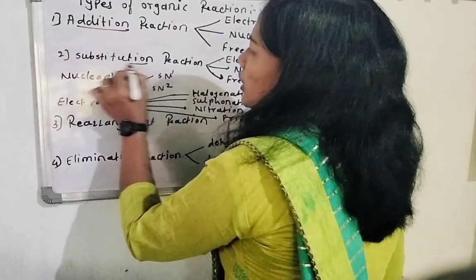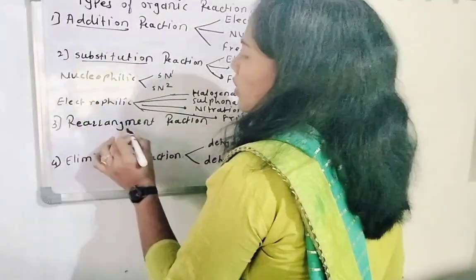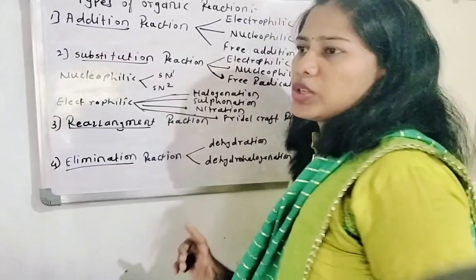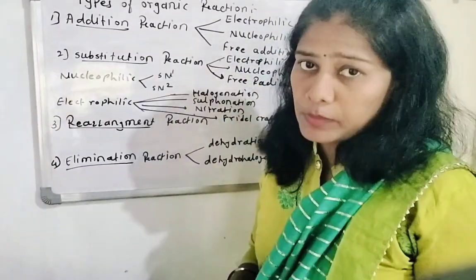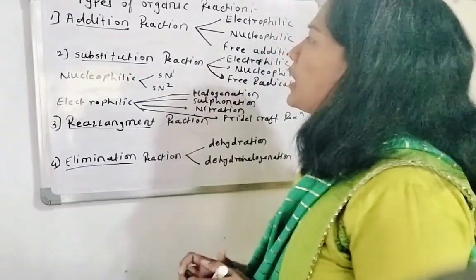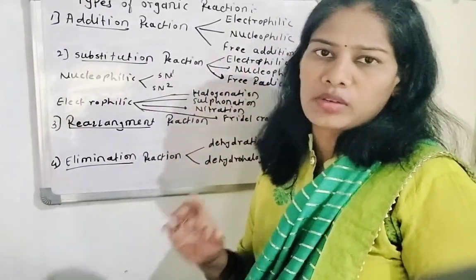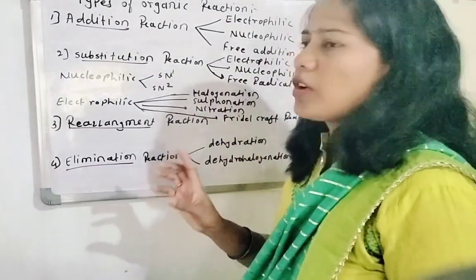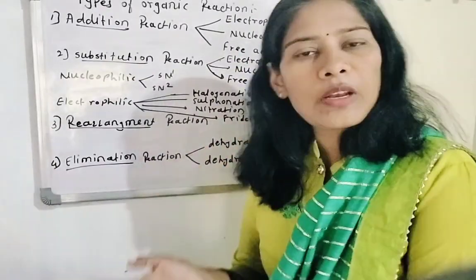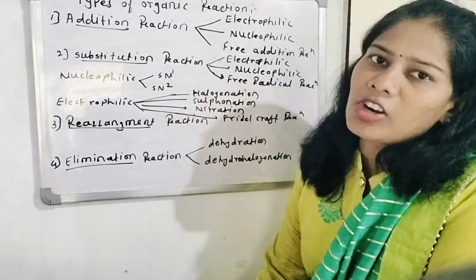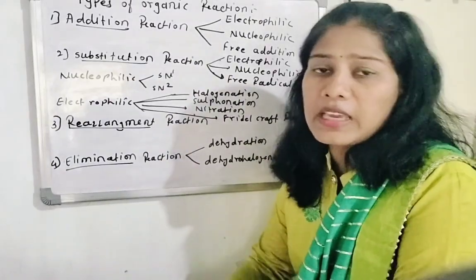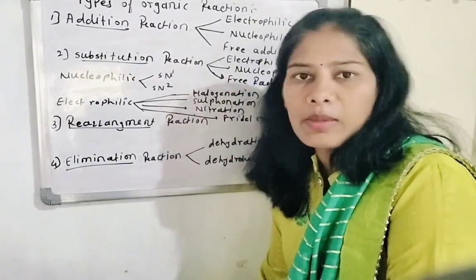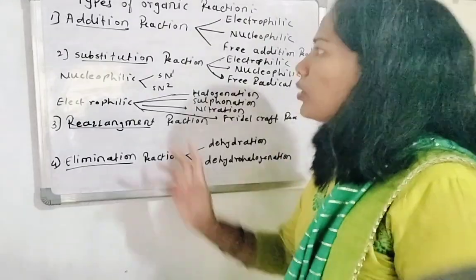First is the Addition Reaction, then Substitution Reaction, then Rearrangement, and then Elimination Reaction. What happens in an Addition Reaction? First of all, a triple bond becomes a double bond, and a double bond becomes a single bond. This is the addition reaction — triple bond makes double bond, double bond makes single bond.